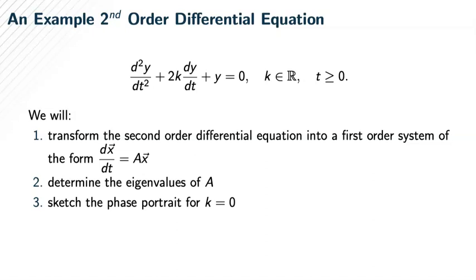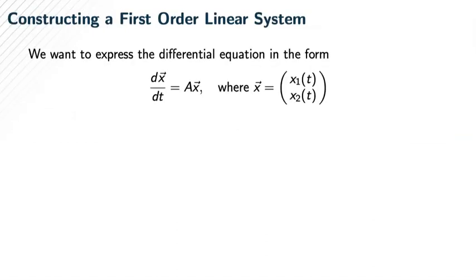The first thing we want to do is express the differential equation as a system. One trick is to set x1 equal to y and x2 equal to y prime. Then x1 prime is y prime, which is just x2. What is x2 prime? x2 prime is y double prime, and using the given second-order differential equation, y double prime is negative 2k times x2 minus x1.